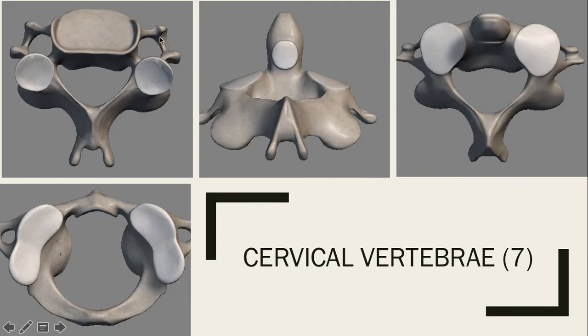In the cervical vertebrae, you can see these holes here on the transverse process. These are called the transverse foramen. That is a unique structure to the cervical vertebrae — the thoracic and lumbar do not have that structure.